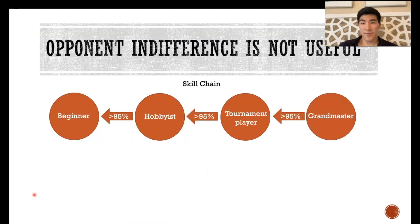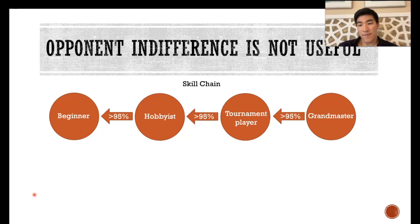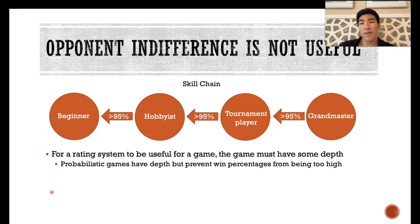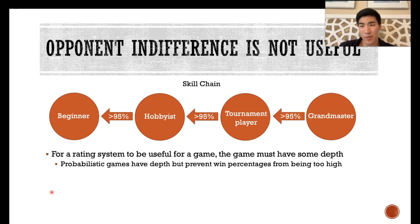All of this sounds really good — it sounds like we've maybe even solved the problem. But it turns out these opponent indifference rating systems aren't very useful, mainly because of their ability to measure the depth of a player pool. For a rating system to be useful, there has to be some notion of depth. We use the idea of skill chains to help gauge this. A skill chain is a list of ratings such that a player with the first rating beats the player with the second rating with high probability, the second beats the third with similarly high probability, and so on. For example, in chess, you have a grandmaster beating a tournament player with 95% probability, a tournament player beating a hobbyist with 95% probability, and a hobbyist beating a beginner with 95% probability — a skill chain of length 4.